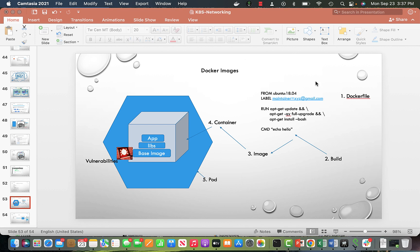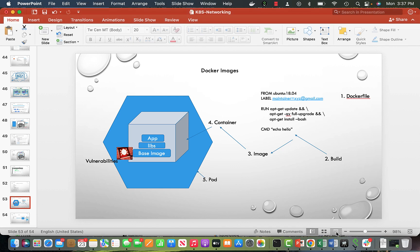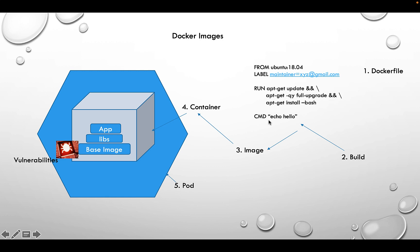Every container has to have an image, and everything starts with a Dockerfile. Here's a sample Dockerfile: it says FROM ubuntu — using a base OS, a particular version. You can put labels, and then you have your packages section where you update, patch, and install things like curl. Finally, you can run a command such as running your JAR file.